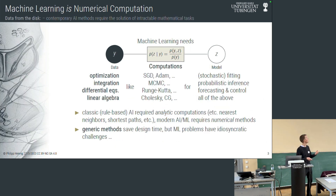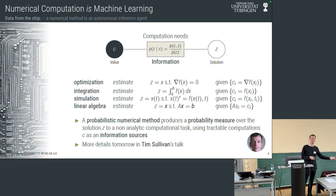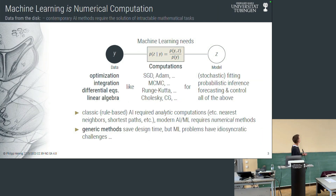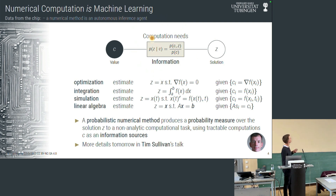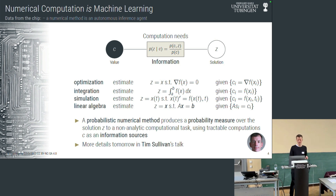In every case, these algorithms estimate an unknown latent quantity z given an observable computable quantity. And clearly, that's exactly the same process as in machine learning — we're estimating latent quantities from data. It's just that the data doesn't come from the real world; it comes directly from the chip, the CPU or GPU or whatever your hardware is. Just like you can have a Bayesian probabilistic perspective on machine learning, you can think about computation as an approximation to Bayesian inference over the latent quantities z given some computation c. Algorithms that use this viewpoint are probabilistic numerical methods.